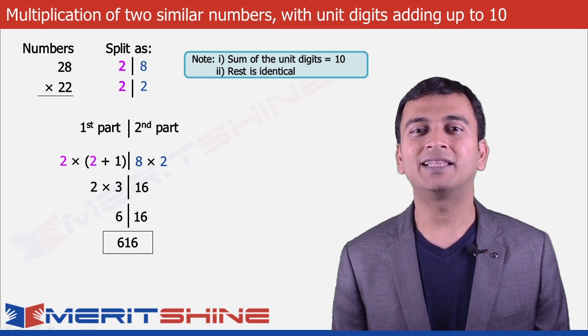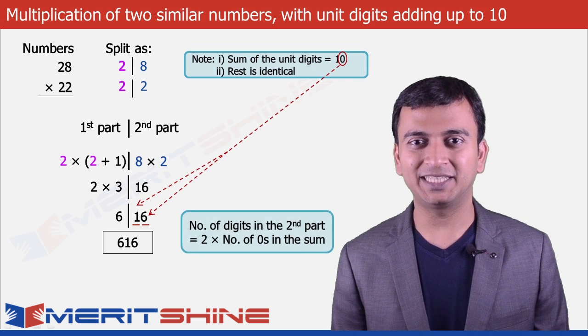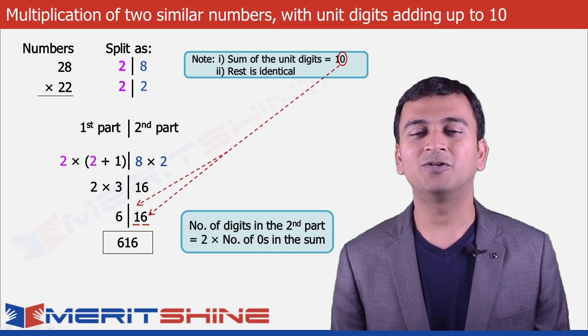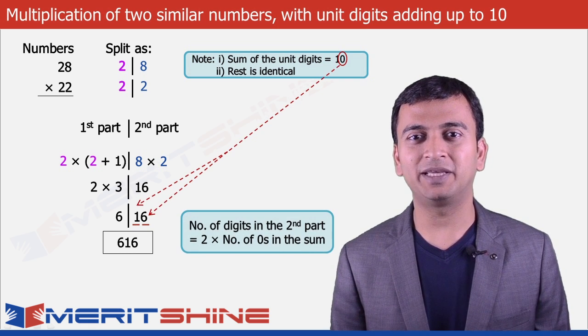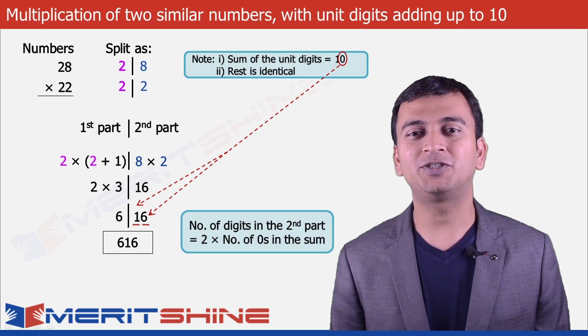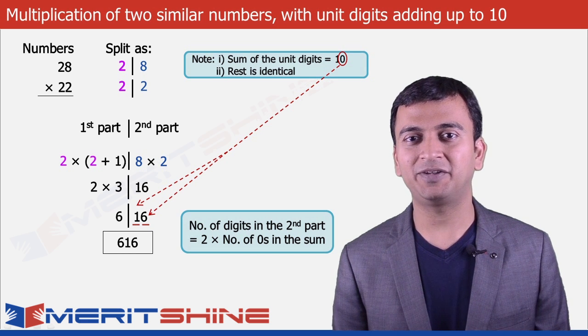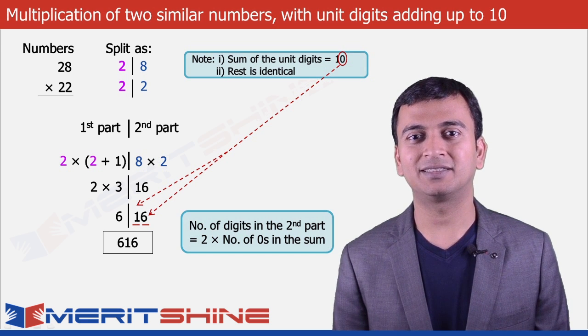Please note that the number of digits in the second part would always be equal to 2 times the number of zeros in the sum of the unit digits.